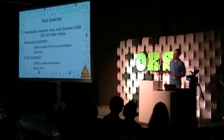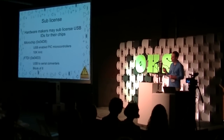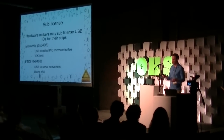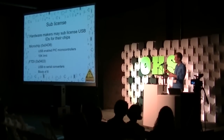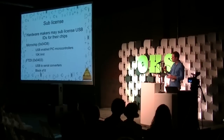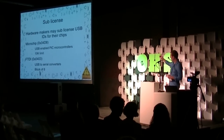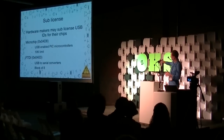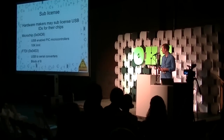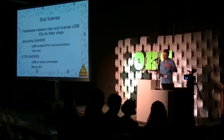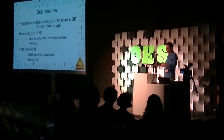There's one legit way to get an ID without shelling out $2,000, and that's to sub-license one from an authorized hardware manufacturer. The USB Implementers Forum will let some hardware manufacturers issue IDs for use exclusively with their own manufactured silicon. Microchip is one example — you can get a USB ID to use with their PIC microcontrollers, good for your first run of 10,000 units. FTDI, the maker of the chip in the original Arduino, will give you a block of eight to use however you want, as long as they're used in their chips.